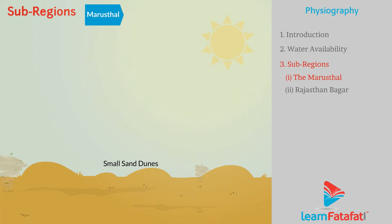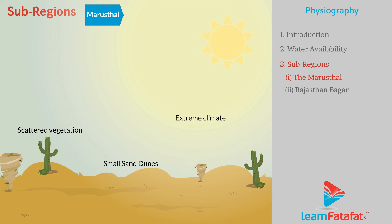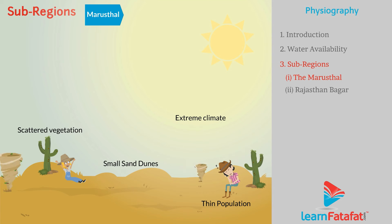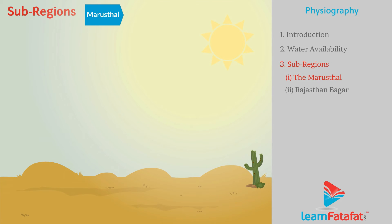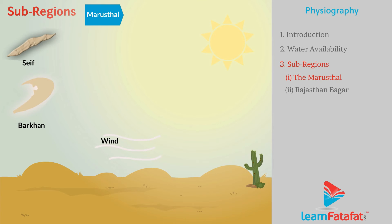Small sand dunes, extreme climate, poor and scattered vegetation, and thin population are the characteristics of this area. On the basis of size, shape, and wind direction, the sand dunes are classified as seif and barchan. These sand dunes appear to shift as a result of speedily flowing wind.